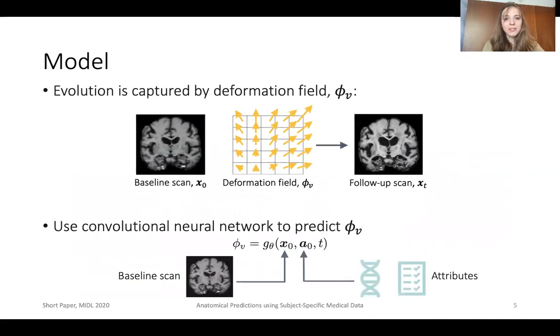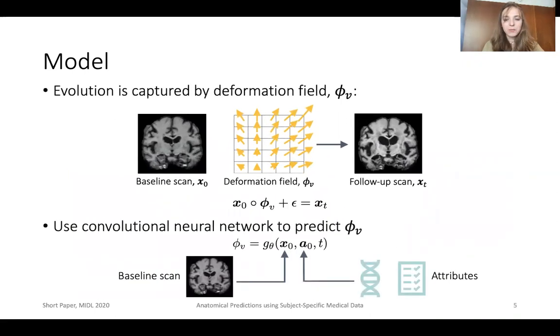We model this deformation field as a function of the subject baseline scan, the subject-specific attributes, and the time difference between the follow-up scan and the baseline scan. We use a convolutional neural network to estimate this function that outputs the deformation field.